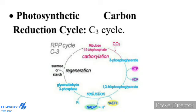Photosynthetic Carbon Reduction Cycle (C3 Cycle) — Calvin Cycle: It includes three distinct phases — Carboxylation, Reduction, and Regeneration of RuBP. It takes six turns of the Calvin Cycle to generate one molecule of hexose.